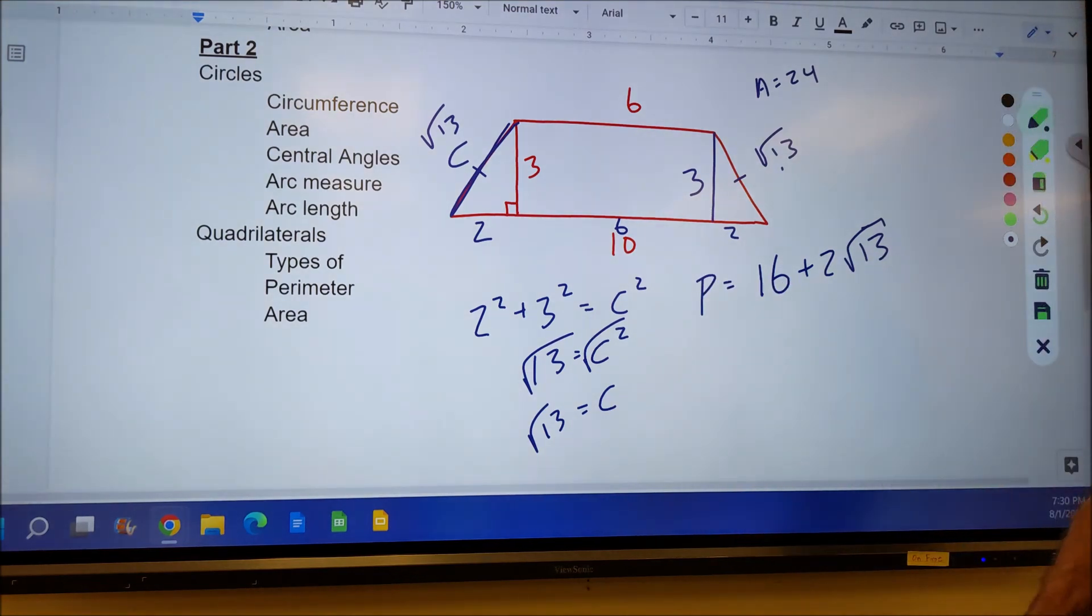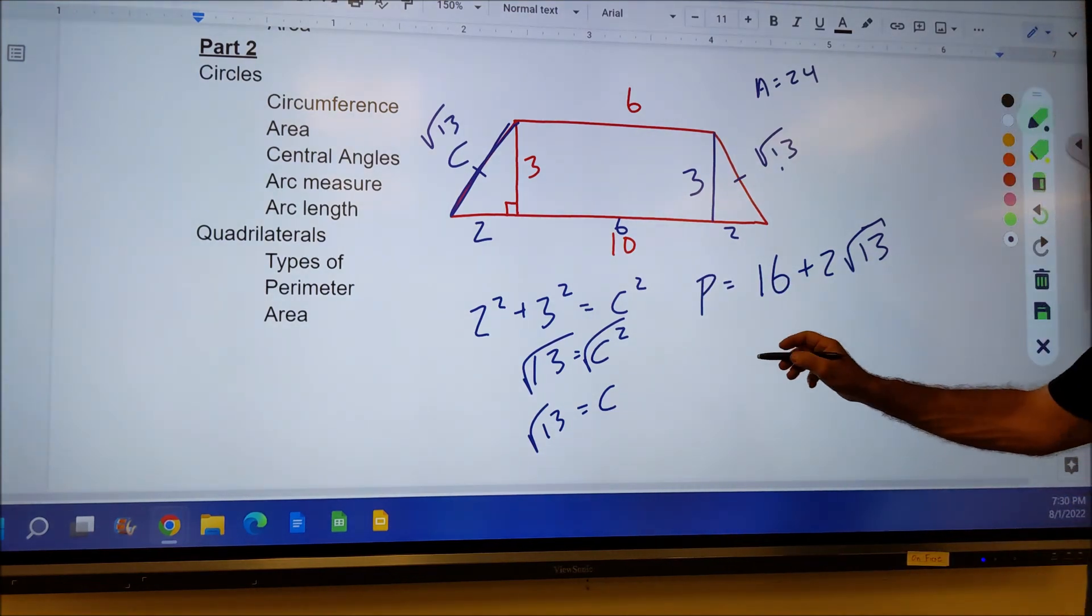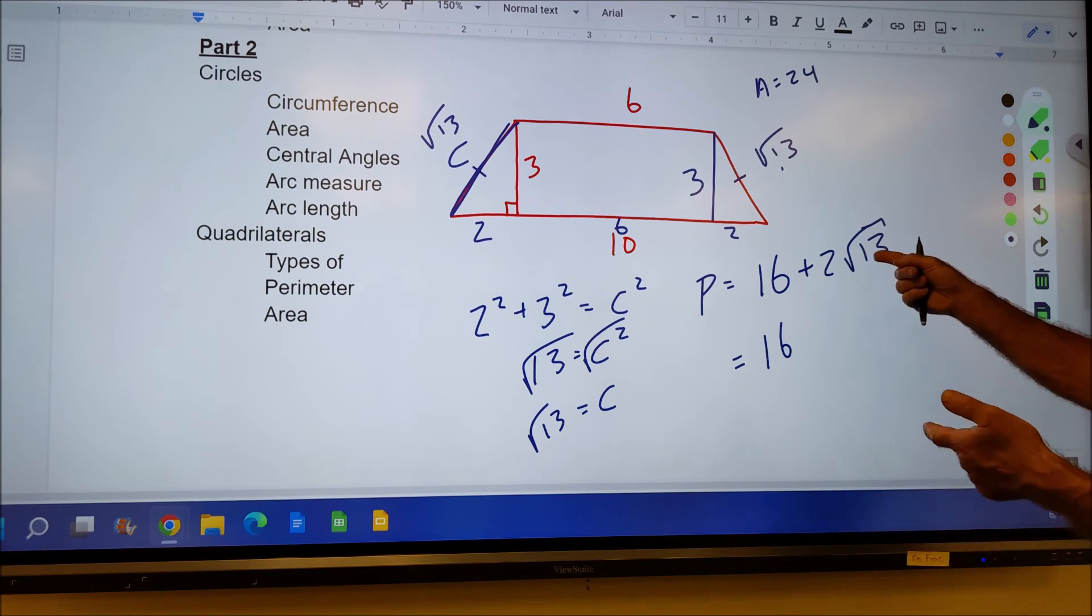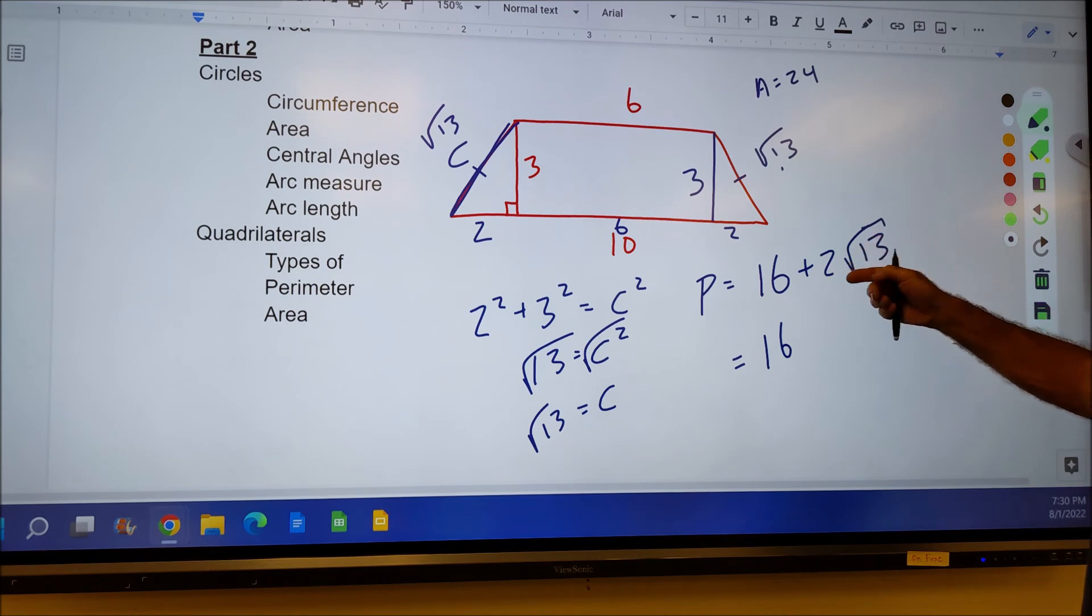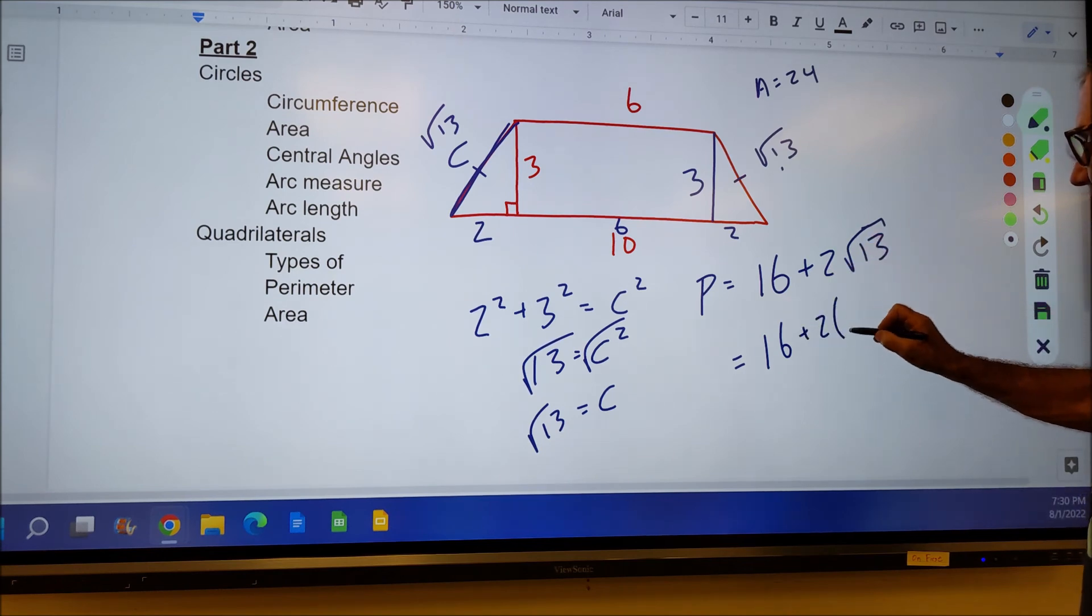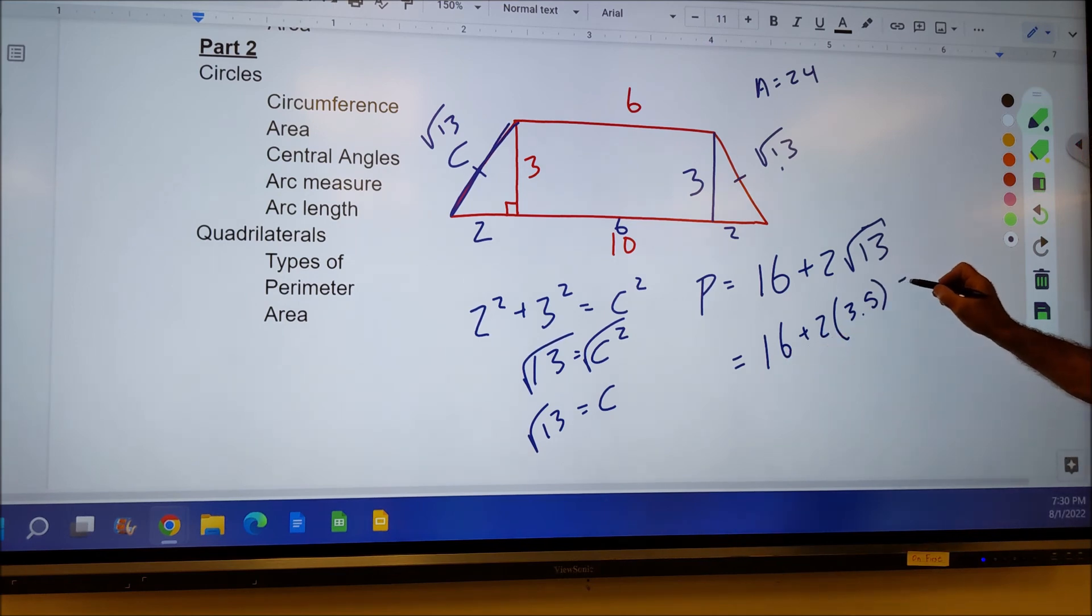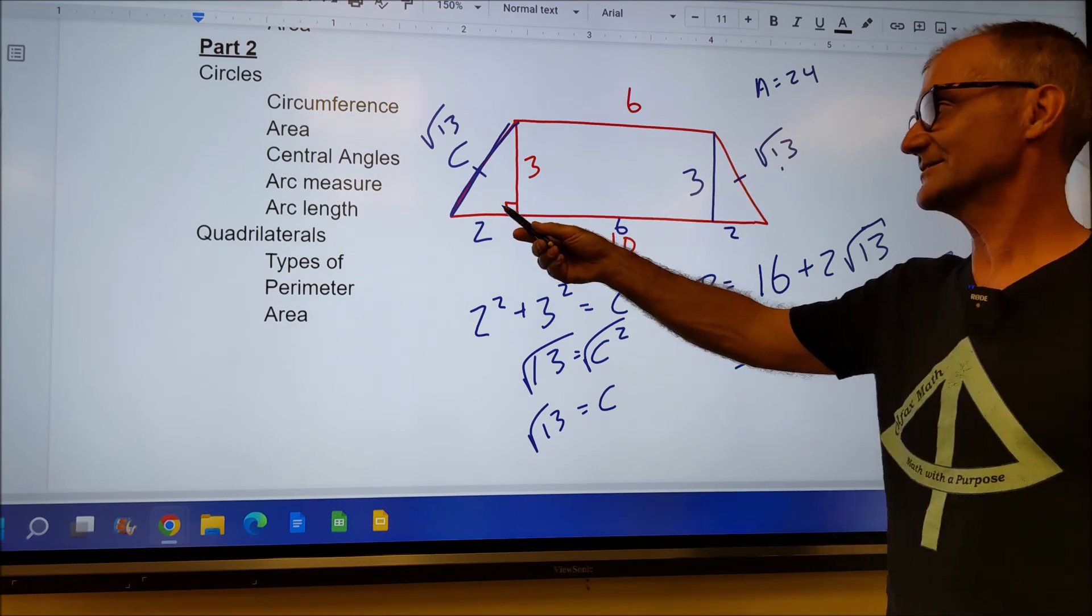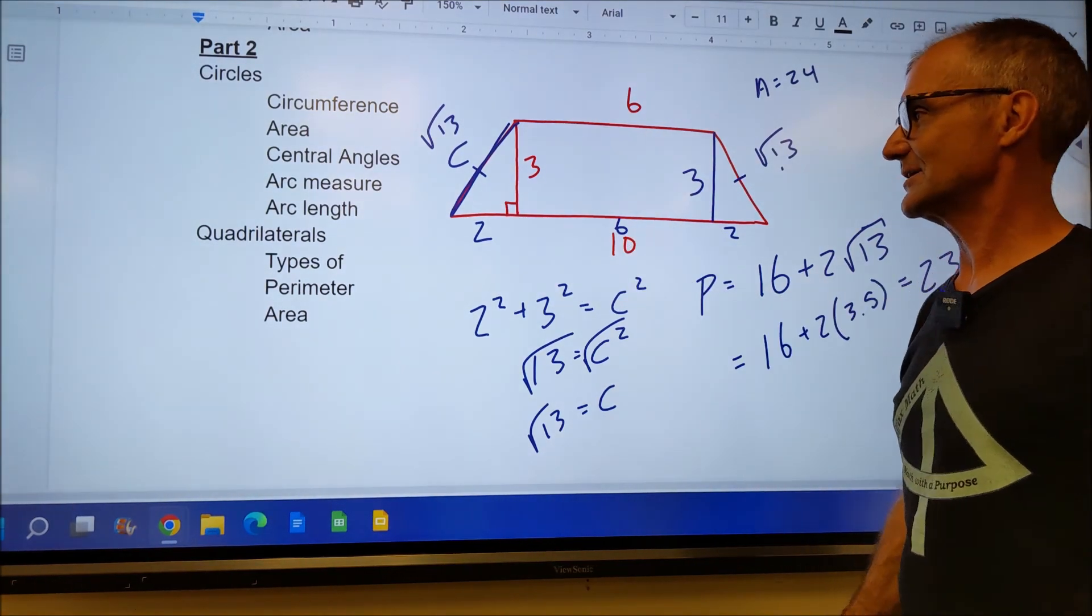That's the perimeter around the outside of the whole thing. You could leave it in square root form like that. If there were multiple choice answers, you might have to approximate it. Let's say it's halfway between 3 and 4, so about 3 and a half. 3 and a half times 2 is 7. 7 and 16 is approximately 23. So if it's multiple choice, you're going to grab something that's close to 23. A lot of little pieces here. You got to know your triangles on these trapezoids.